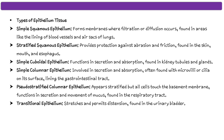The next type is pseudo-stratified columnar epithelium. This tissue appears stratified but all cells touch the base membrane — 'pseudo' meaning false. It functions in secretion and movement of mucus, and is found in the respiratory tract. Finally, transitional epithelium is found in the urinary bladder; it stretches and permits distension, expanding and then returning to its original state.